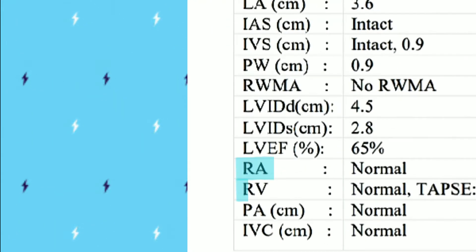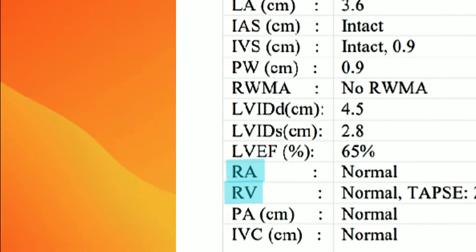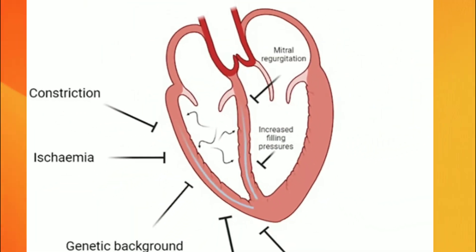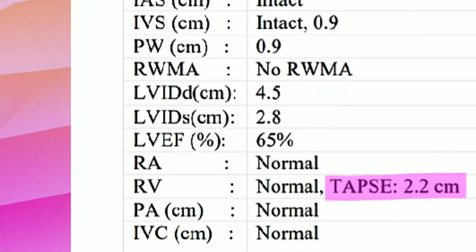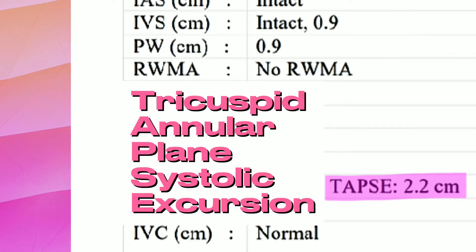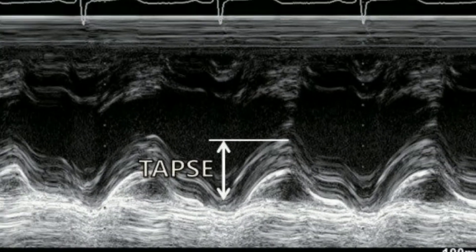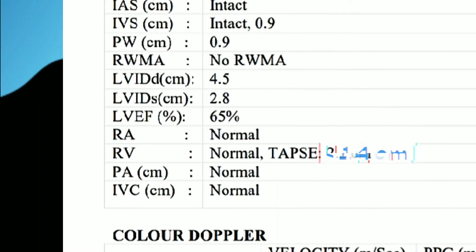Next are RA and RV — right atrium and right ventricle. These chambers are either normal or dilated. Dilated RA and RV are seen in right ventricular dysfunction. Next is TAPSE — tricuspid annular plane systolic excursion. It is studied to determine right ventricular systolic function. TAPSE less than 1.4 cm is considered right ventricular dysfunction.